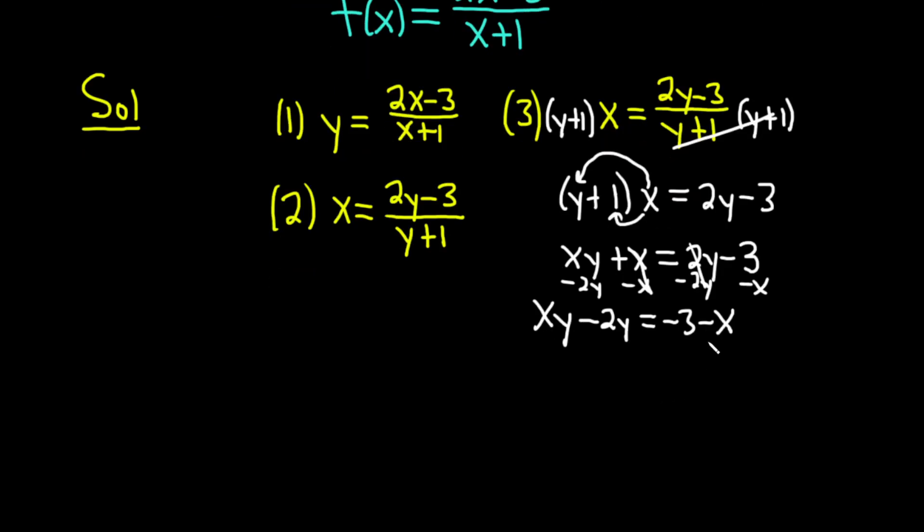At this point, we're in a really good place because we can factor out that y in parentheses. And then we have to ask, what goes here? What do we multiply by y in order to get xy? Well, just x. And what goes here? Well, what do we multiply by y in order to get negative 2y? Well, negative 2. And this is equal to negative 3 minus x.